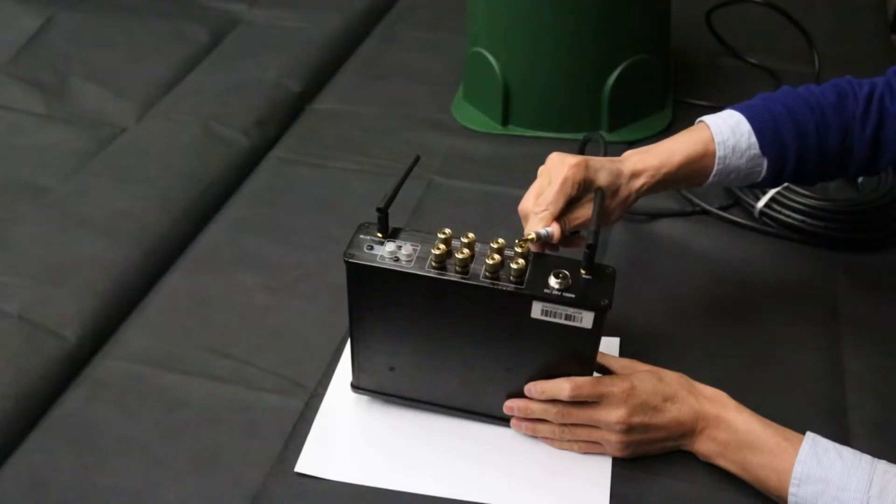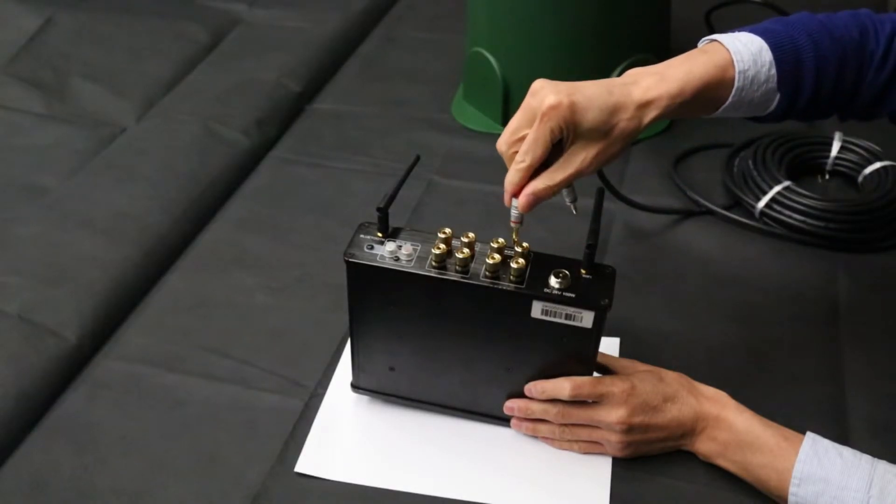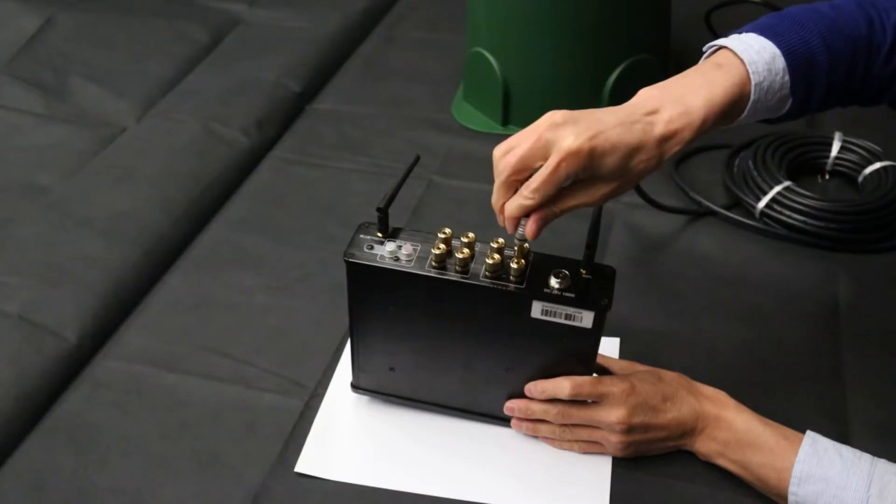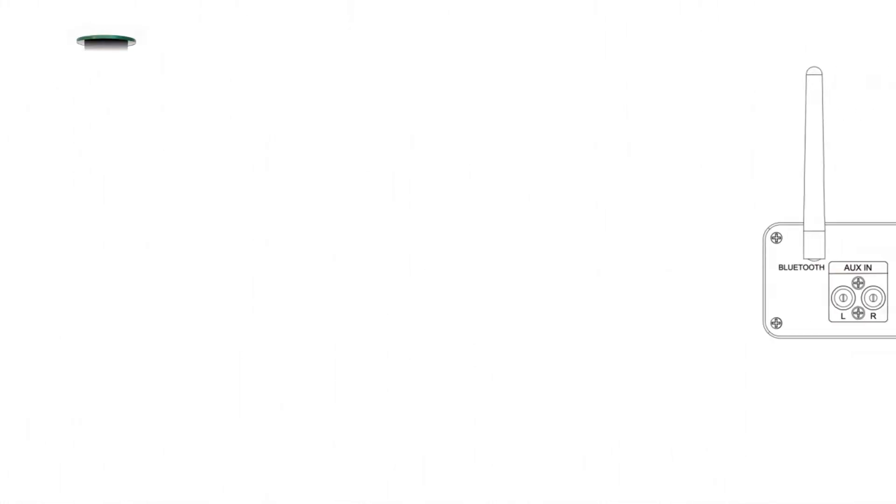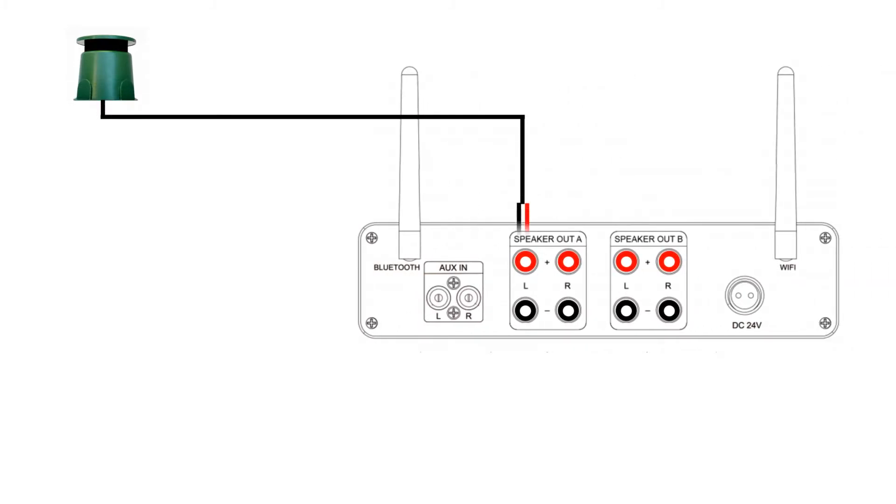With the banana plugs ready, you can insert the positive wire into the first positive terminal and negative wire into the matching negative terminal. Repeat the same previous steps and plug in the second speaker into the other channel's terminals.